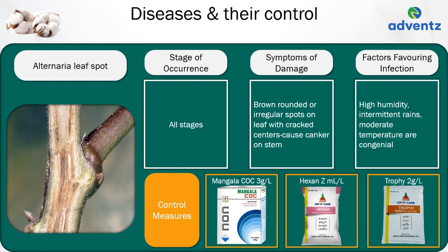The next disease is Alternaria leaf spot. It can occur at all stages. The symptoms of damage are brown, rounded or irregular spots on leaves with cracked centres, and cankers on stems. High humidity, intermittent rains and moderate temperature are congenial to Alternaria leaf spot. Control: apply Mangala COC at 3 grams per litre, or Jai Kisan Hexan, or Jai Kisan Trophy at 2 grams per litre.